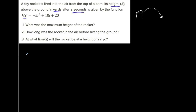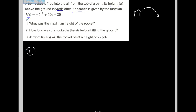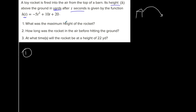For the first question: what was the maximum height of the rocket? Maximum height — so where's that? That's the highest point on the parabola, which technically happens at the vertex. The maximum height represents the y-coordinate of the vertex.